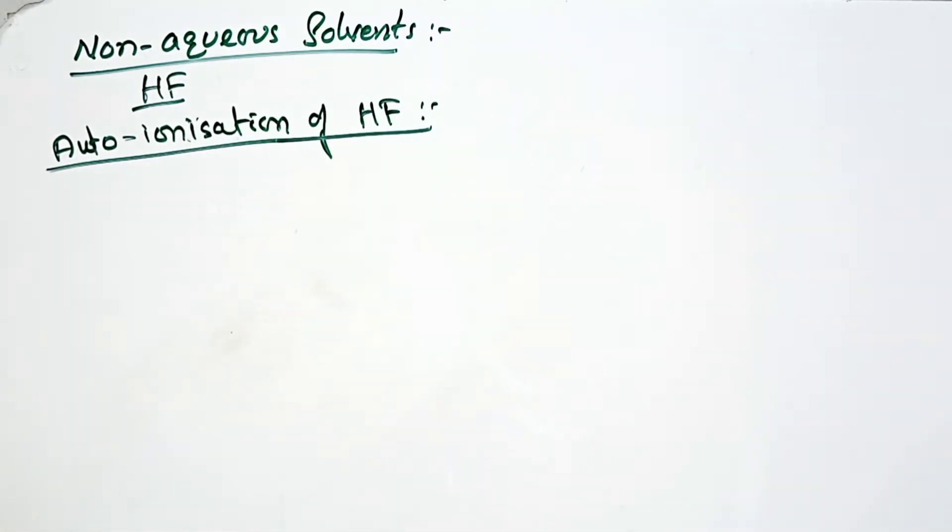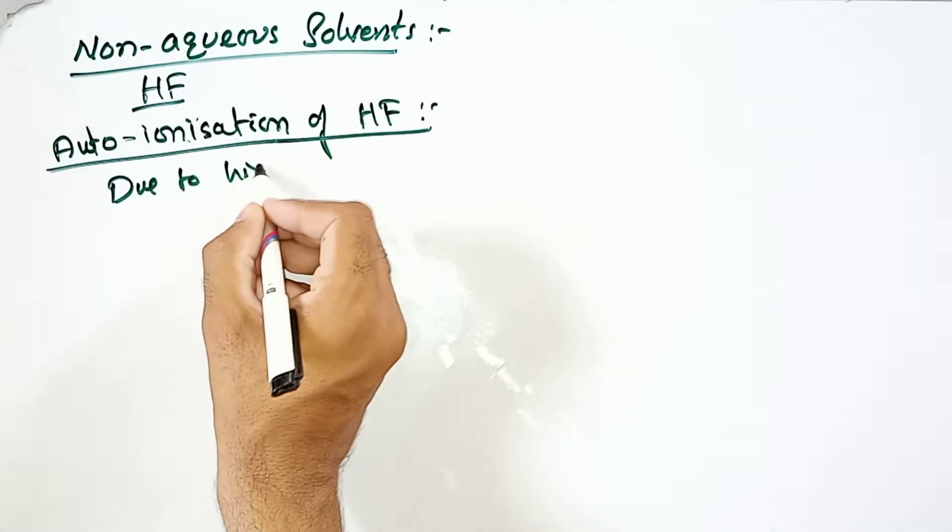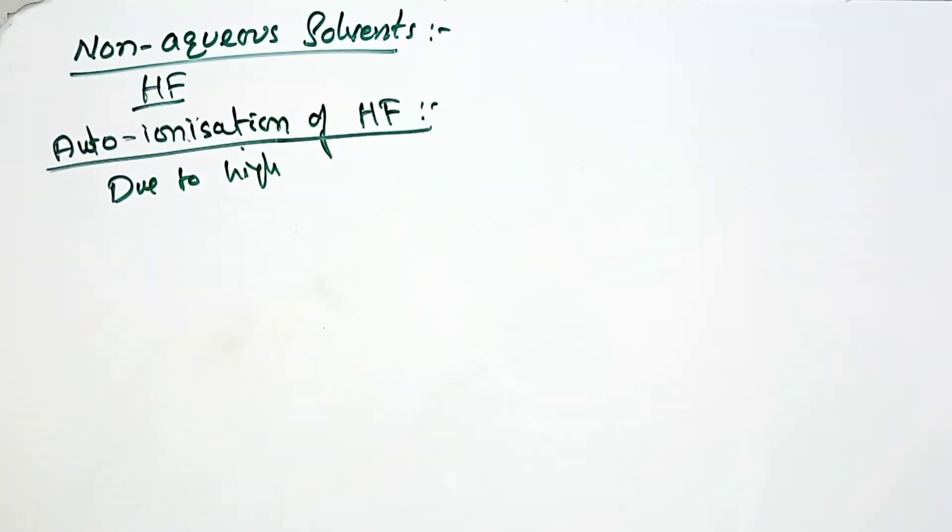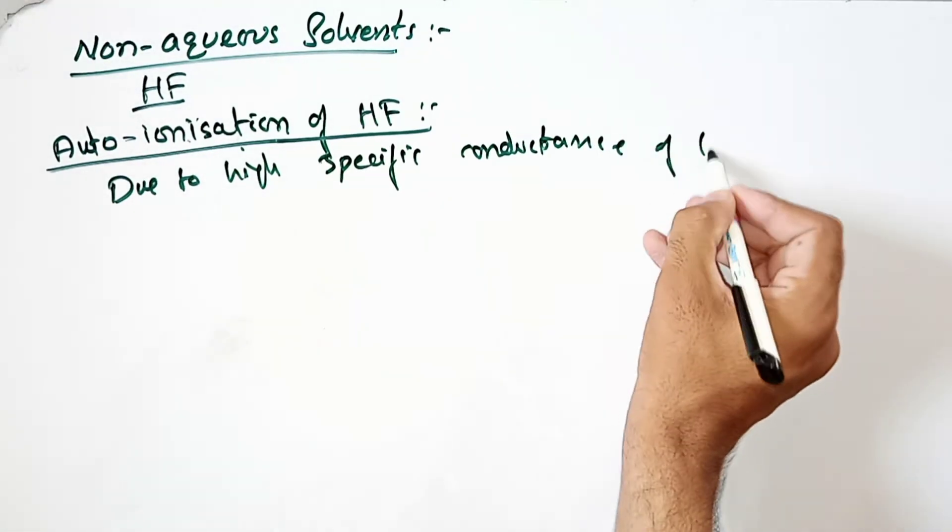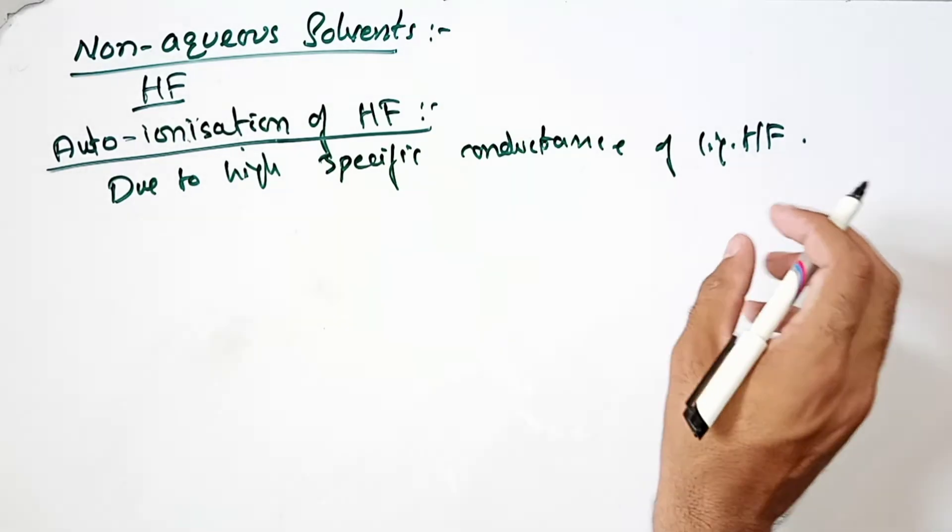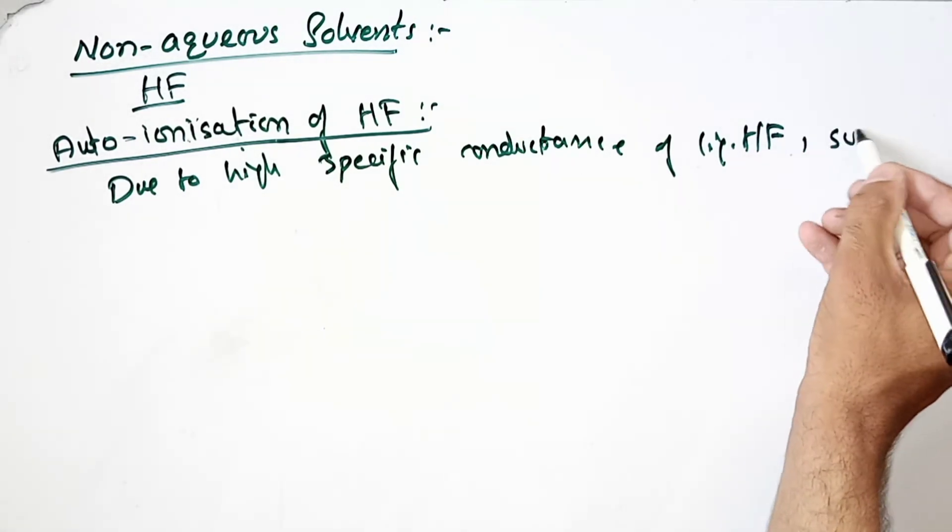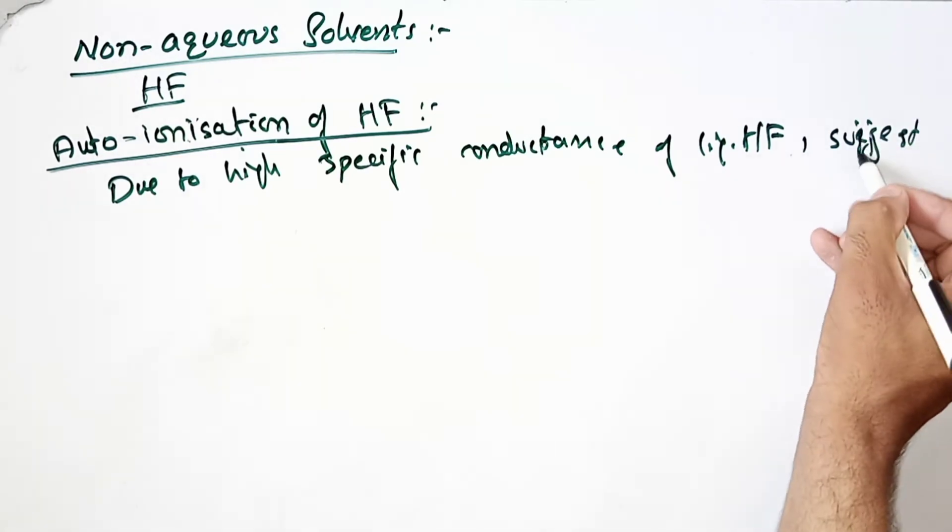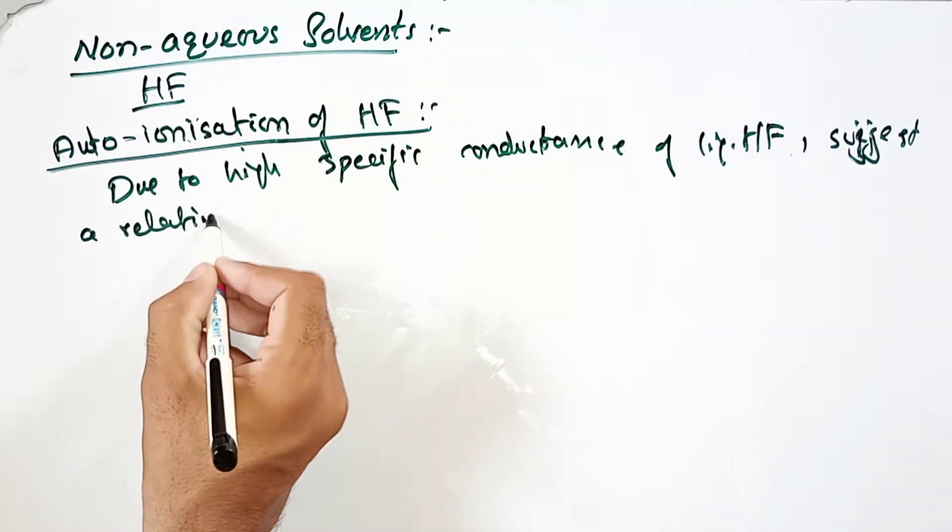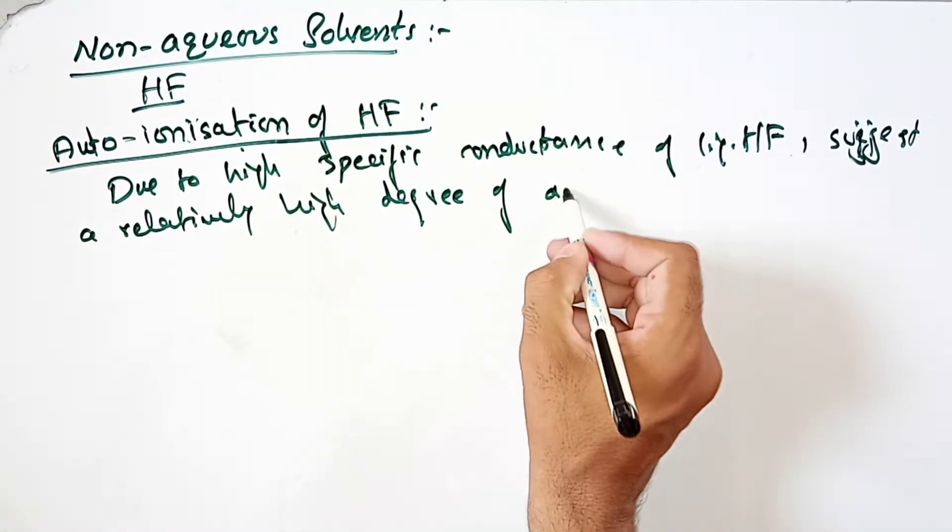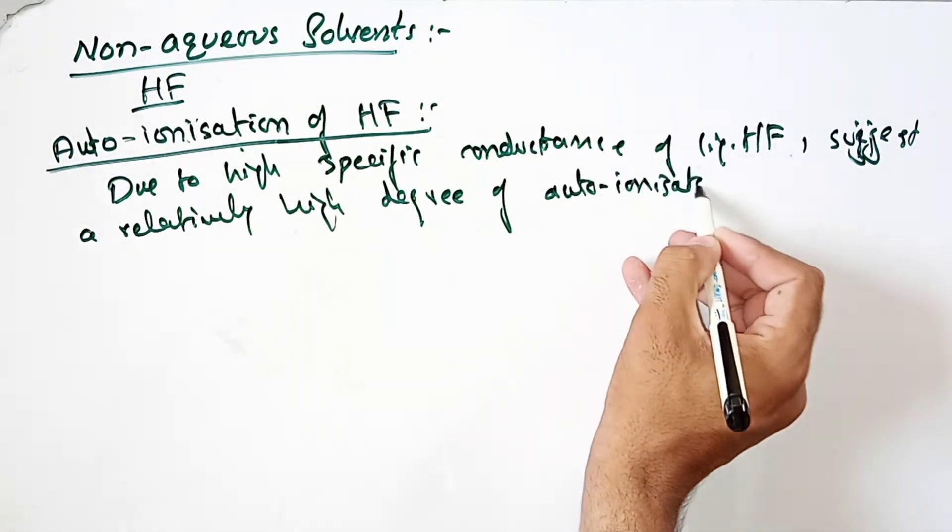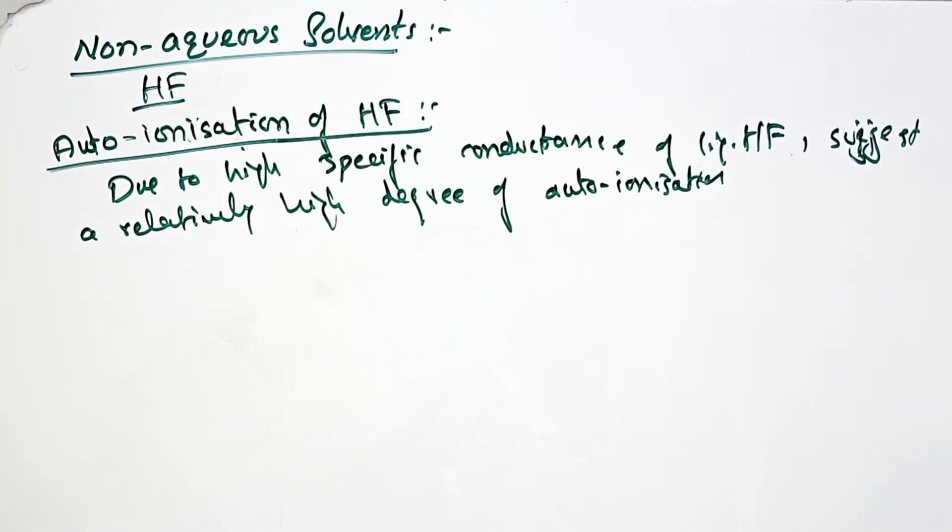Due to the high specific conductance of HF, HF suggests a relatively high degree of auto-ionization of liquid HF. For example, in auto-ionization of HF, it can dissociate into H+ and F- ions.